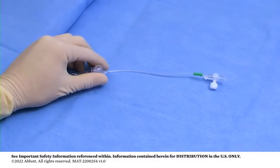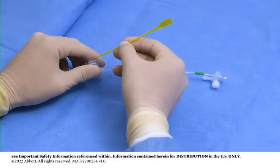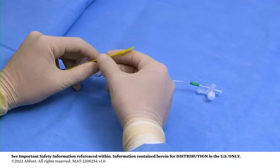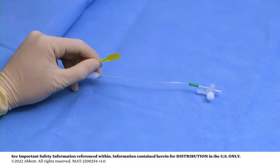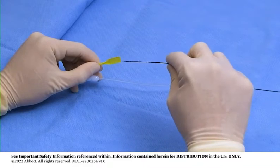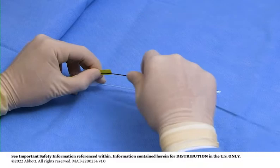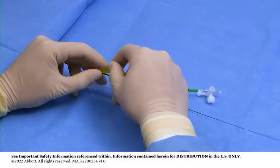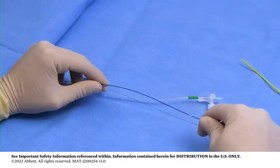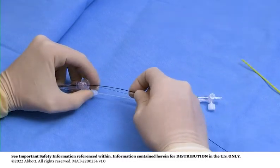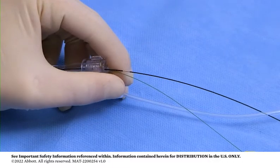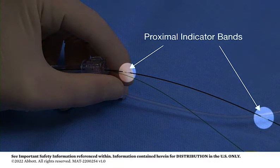Use the introducer tool provided to pass the loaded delivery catheter and bare wire through the hemostasis valve of the guide catheter or introducer sheath. Notice the proximal indicator bands are positioned at 90 centimeters and 100 centimeters from the distal tip of the delivery catheter to aid catheter introduction.